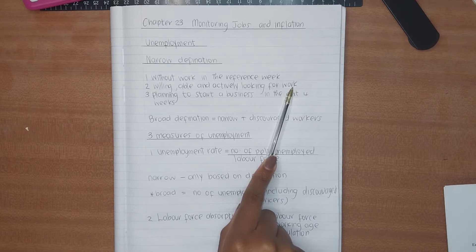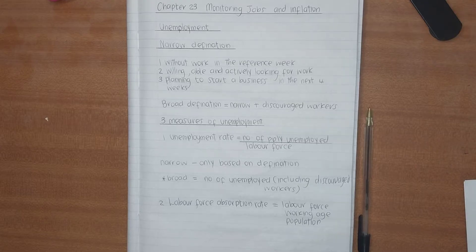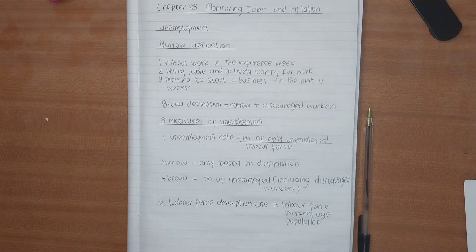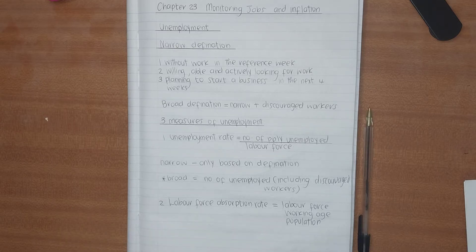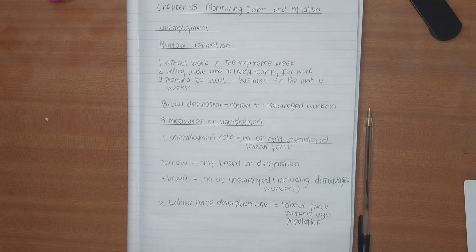If you're not looking for work, you are either marginally attached or you are a discouraged worker. So let's look at the narrow definition again: you must be without work in the reference week, you must be willing to work, you must be able to work, you must be actively looking for work, or you must be planning to start a business in the next four weeks from when the survey was done. With the broad definition, you take the narrow definition and also add discouraged workers.